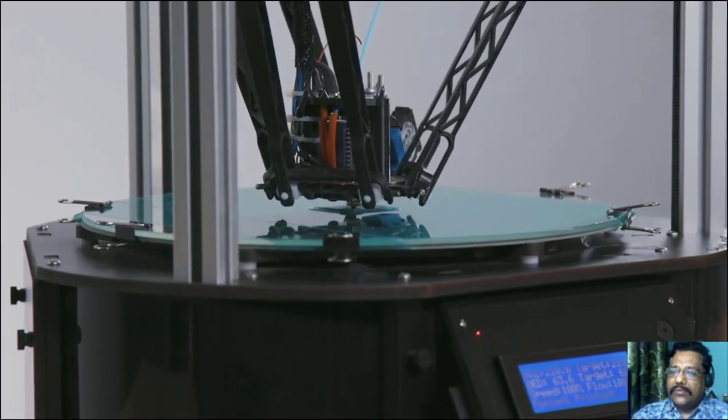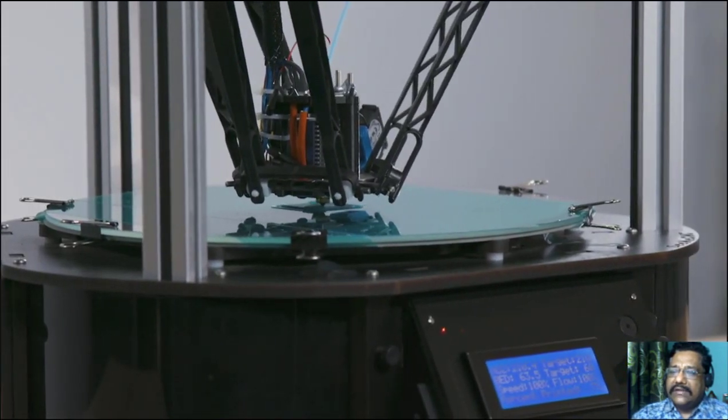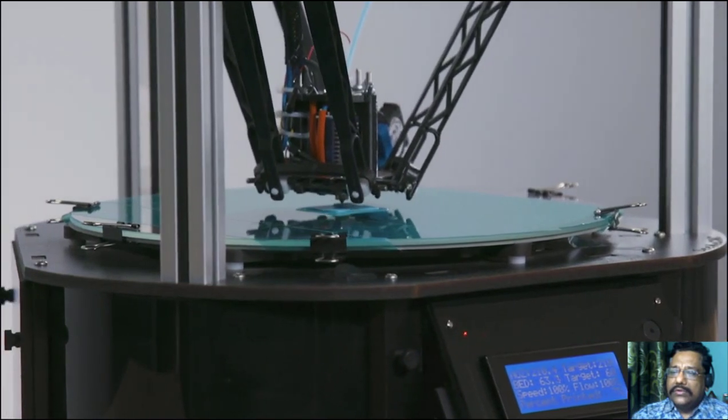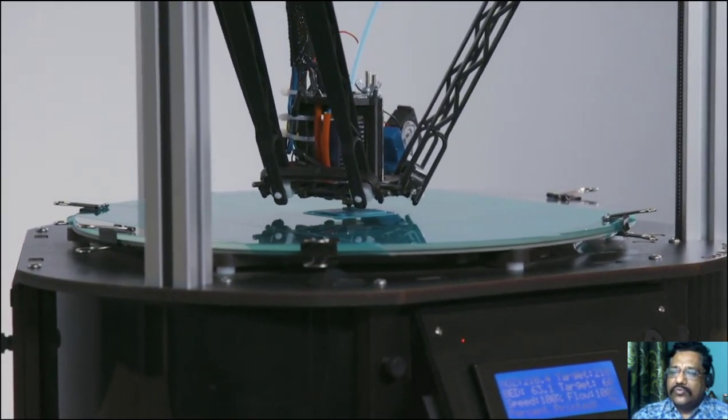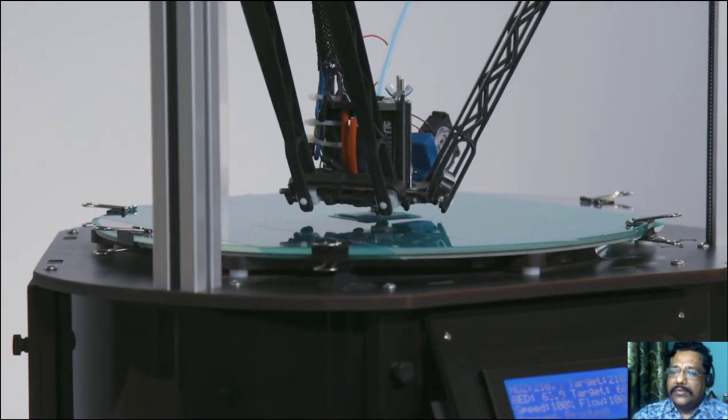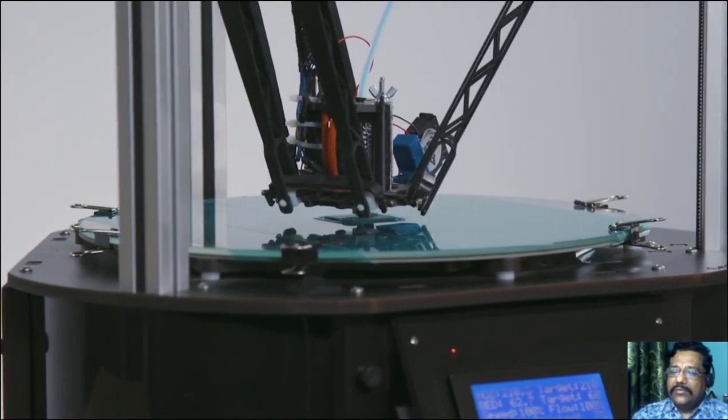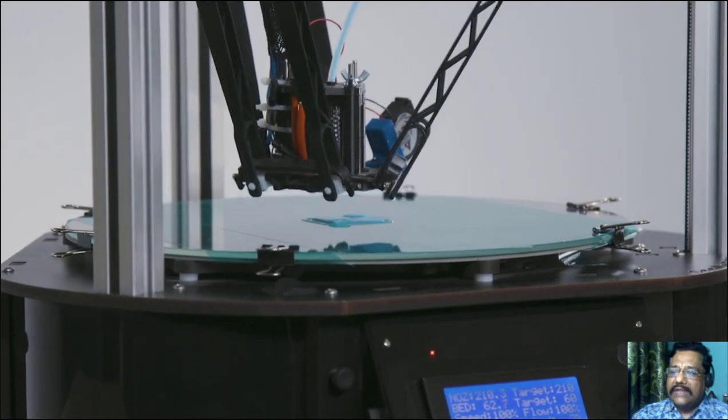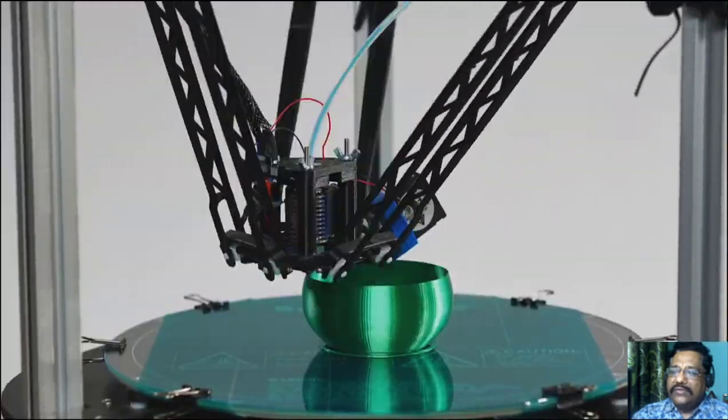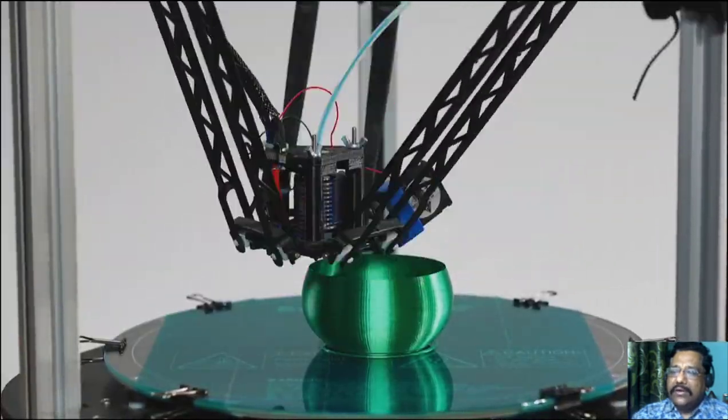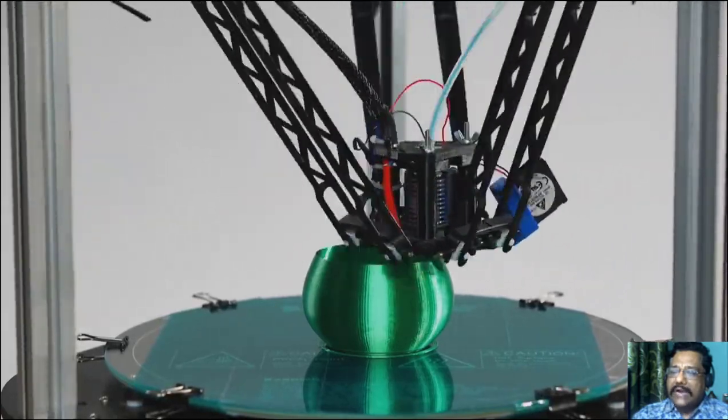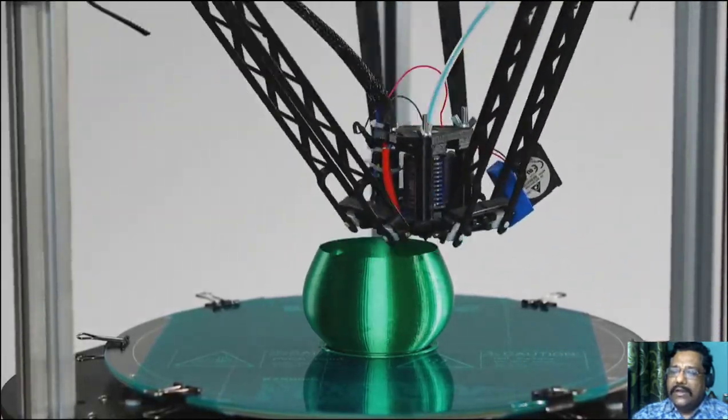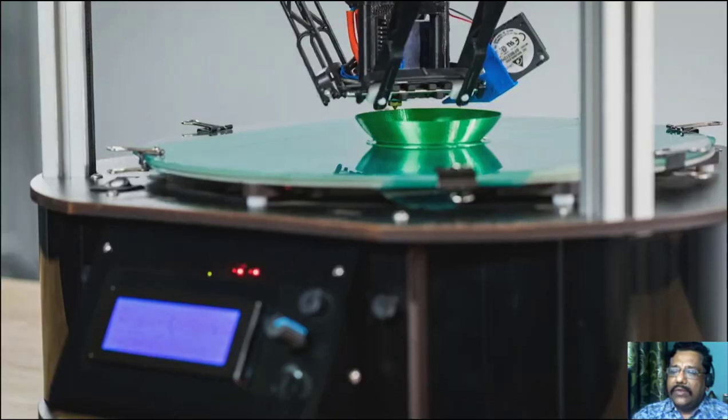Now there are other types of printing technology. The two models we'll look at predominantly are the two most popular. The most popular printing process is Fused Deposition Modeling or FDM, like the one we just saw with the boot. It's a roll of filament being extruded through a hot nozzle, building one layer at a time.